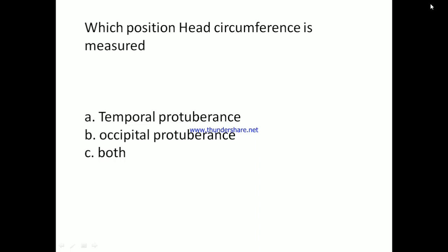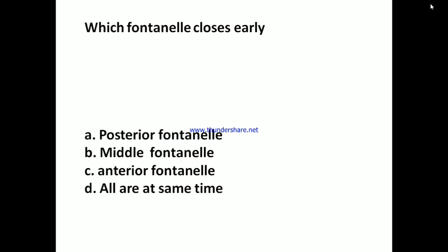Which position is used when measuring head circumference? A: Temporal protuberance, B: Occipital protuberance, C: Both. The answer is B: Occipital protuberance.